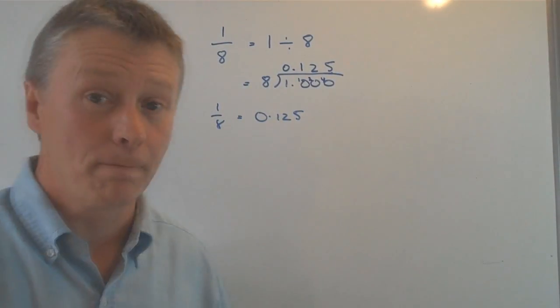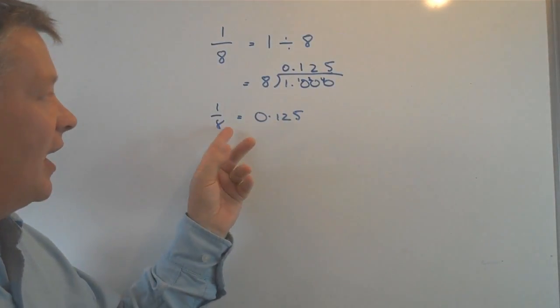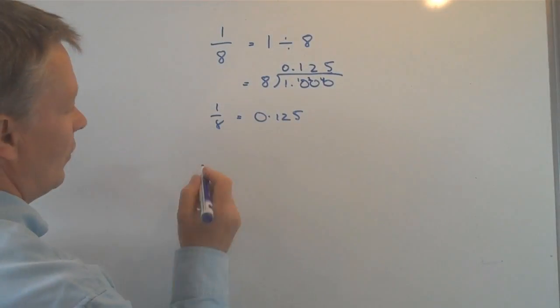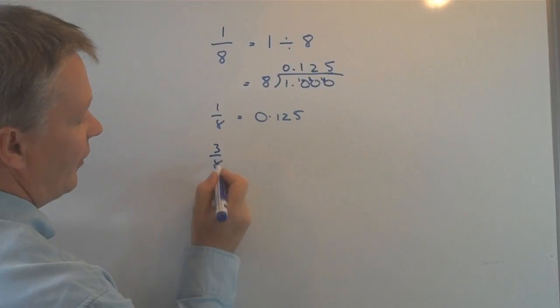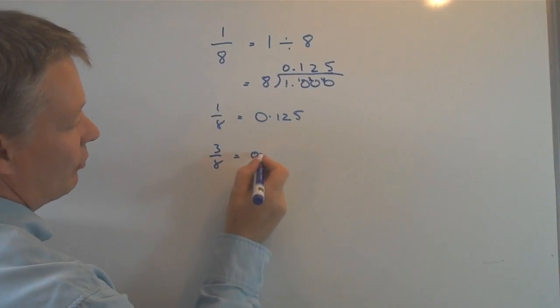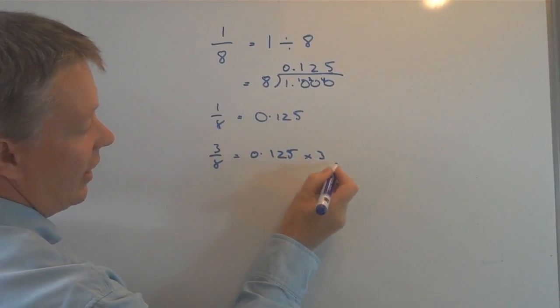So, it's the same. Okay. What that means is that we can either use this, then, to, let's say we need to calculate three-eighths. Well, if it was three-eighths, it's the same as saying 0.125 times three.